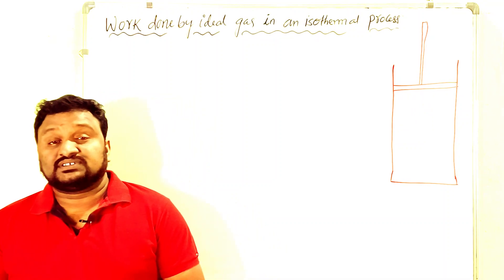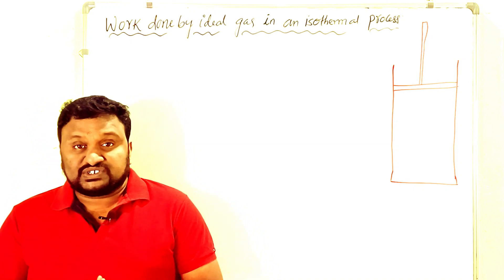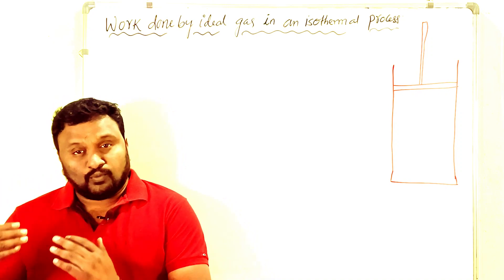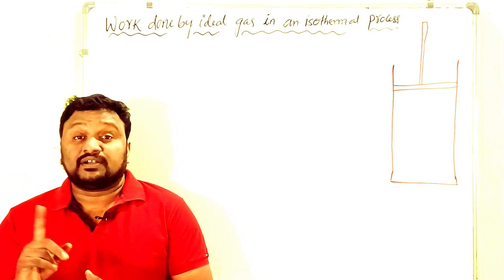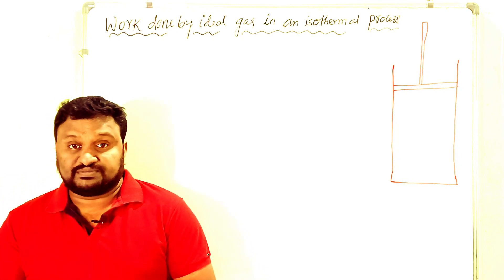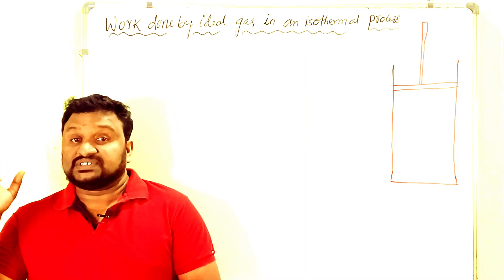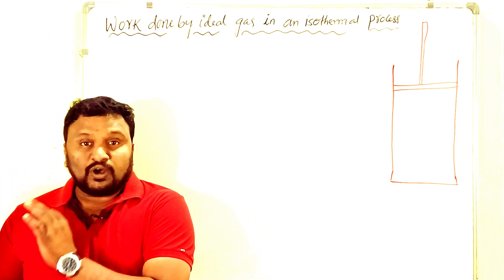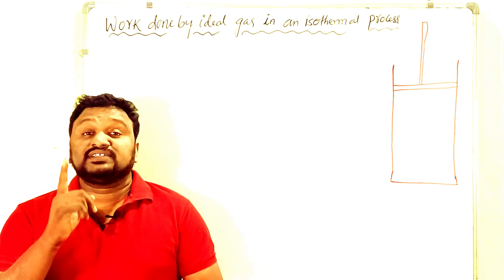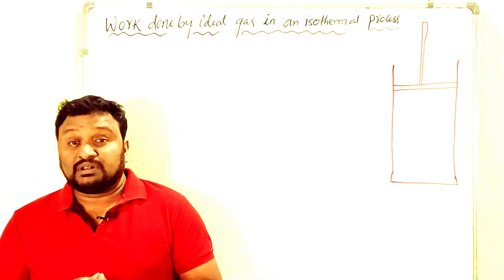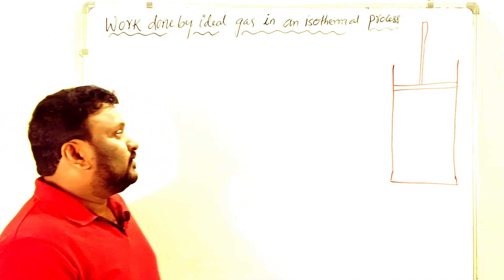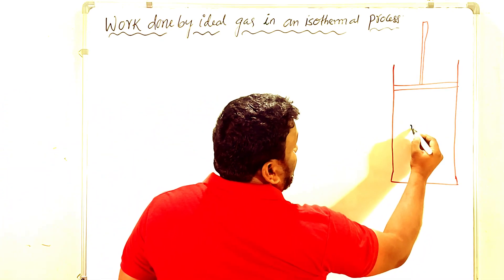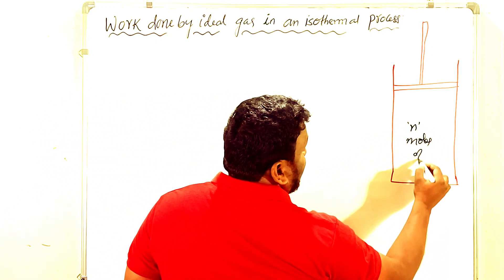What is meant by isothermal process? The process in which, in a thermodynamic system, pressure and volume can change but temperature always remains constant — that process is called isothermal process. Even though pressure and volume can change, the temperature remains constant. Here we have one system — a container having n moles of ideal gas.